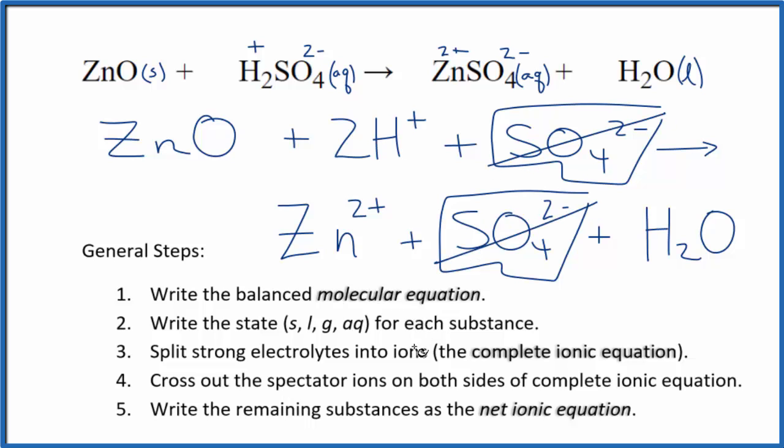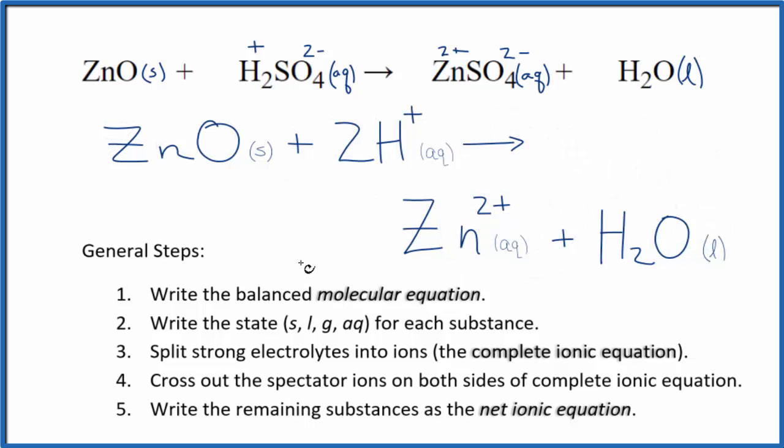Everything else is unique, so what's left is the net ionic equation here for ZnO plus H2SO4. I'll clean this up and write the states. We'll have our net ionic equation. So this is the balanced net ionic equation for zinc oxide plus sulfuric acid.